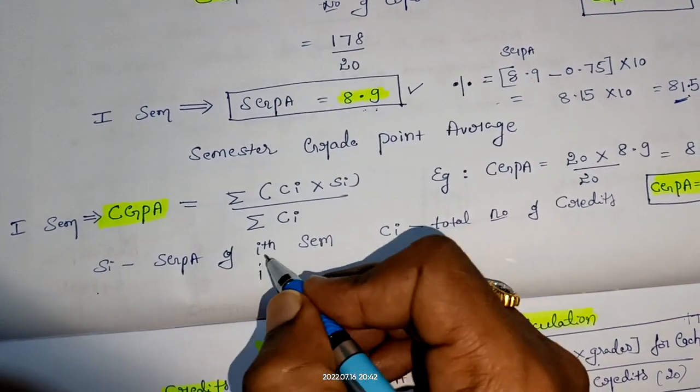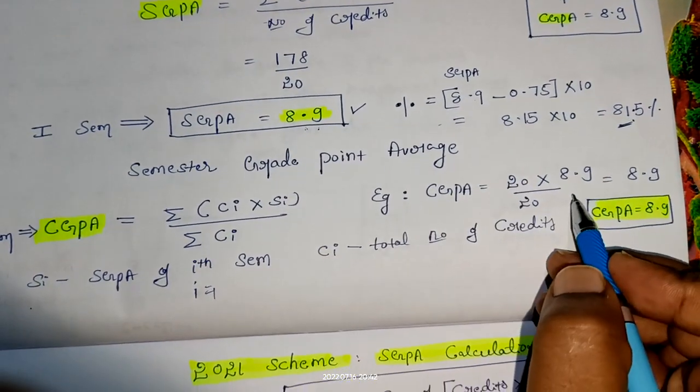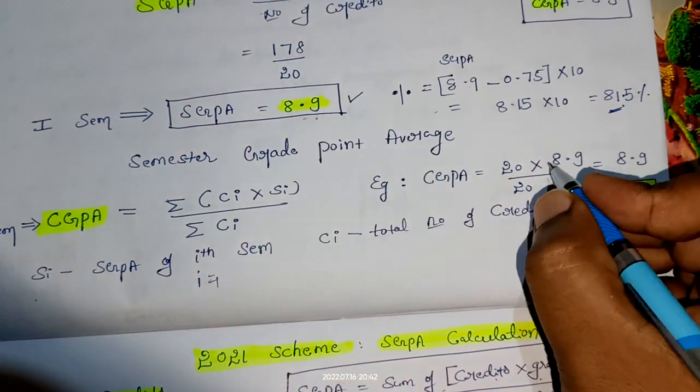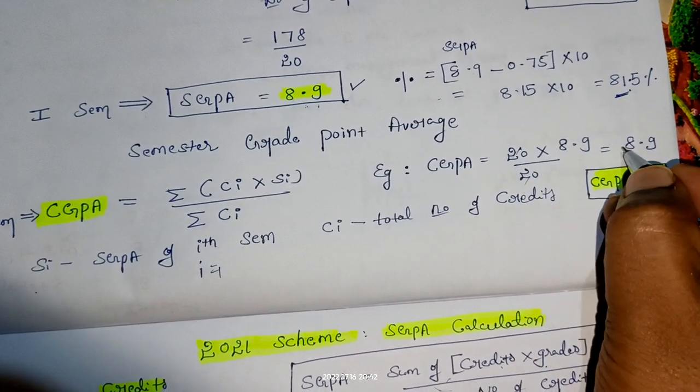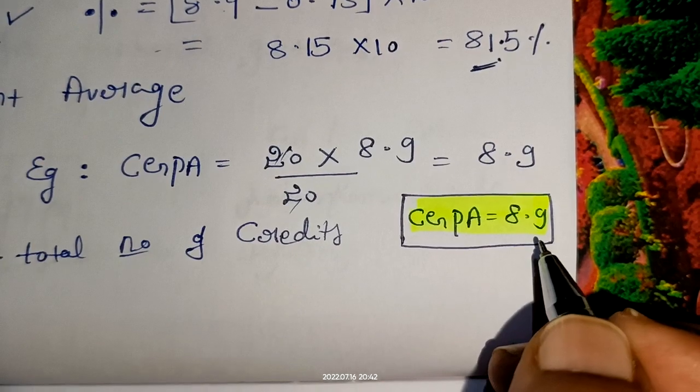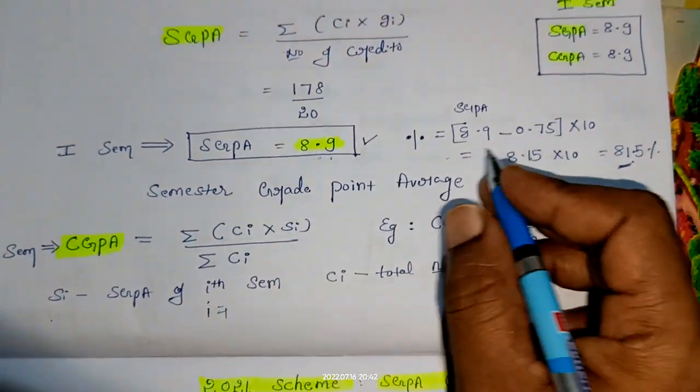What is the SGPA of the first semester? 8.9. So summation of Ci means number of credits is 20. So 20 and 20 will get canceled. You will end up with 8.9, so CGPA is 8.9.